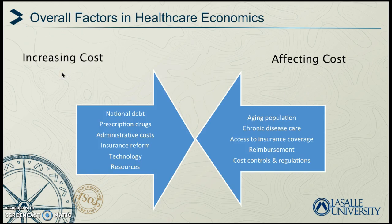Some overall factors in health care economics: we can look at increasing cost, and we know that the annual per-capita expenditures for health care in the United States is one of the highest in the world. Technology is increasing at a speed we can barely keep up with. U.S. prescription drugs are multiplying and consumers are exposed to these options in the media. Chronic disease and the aging population create additional costs.